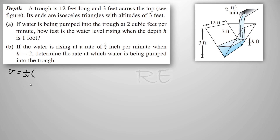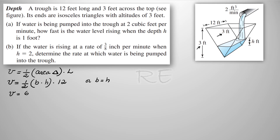First, we're going to find an equation that relates the water depth to the volume. Volume is equal to one-half of the area of the triangle times the length. The area of the triangle is base times height, and the length is 12 feet. The base and the height are equal — B equals H — therefore the volume is half of 12, which is 6, times H times H, which is H squared.